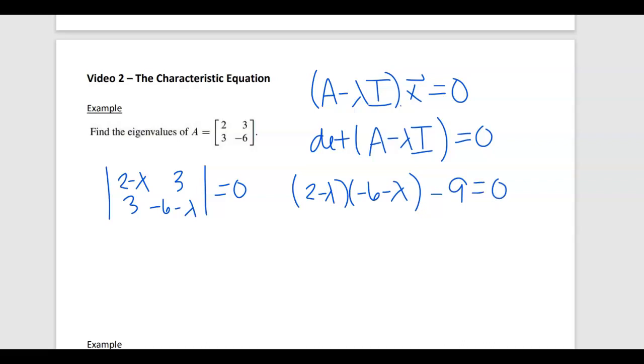If I expand this, I end up getting lambda squared, let's see, plus 6 lambda minus 2 lambda minus 12 minus 9. So lambda squared plus 4 lambda minus 21. Two numbers that multiply to negative 21, but add to 4 would be lambda plus 7 and lambda minus 3. And so my two eigenvalues are going to be negative 7 and 3.